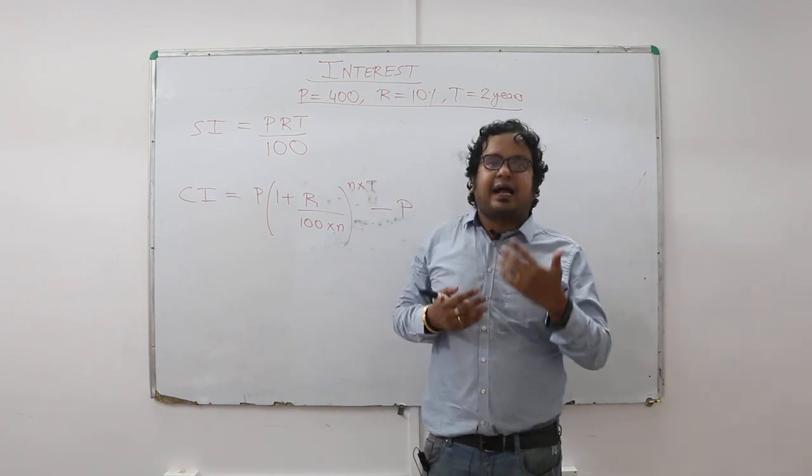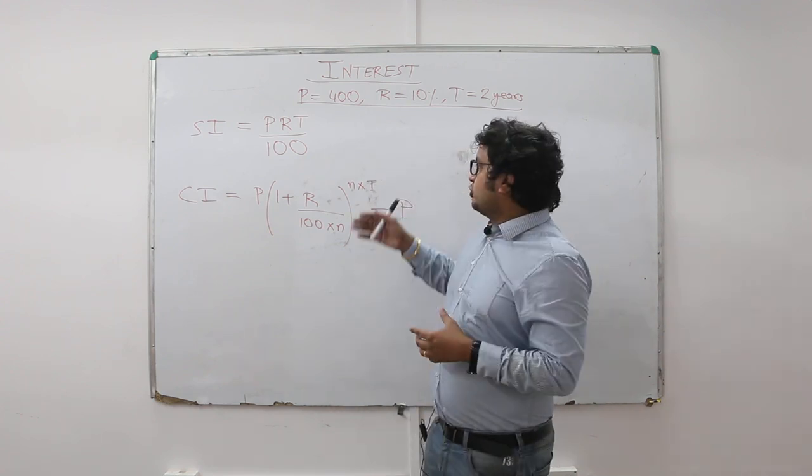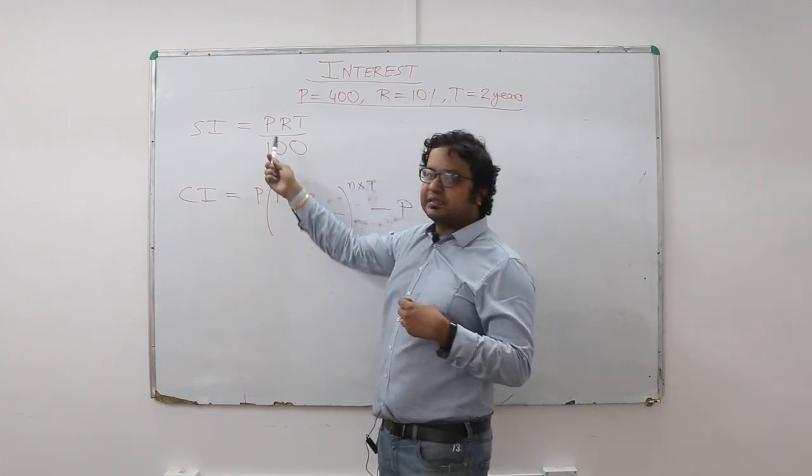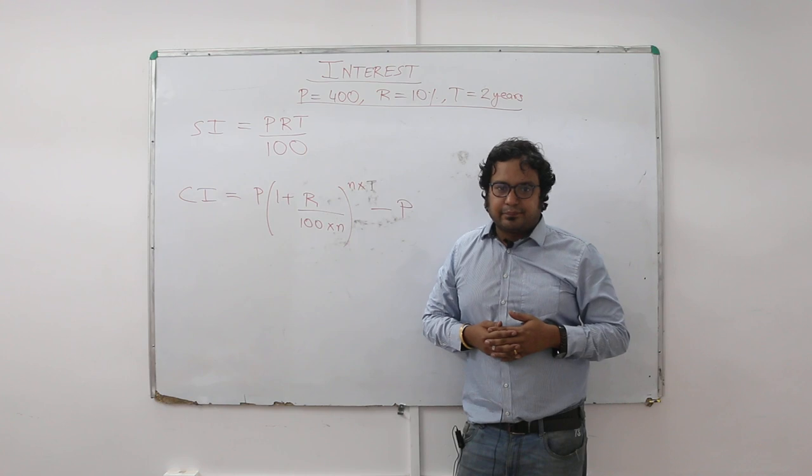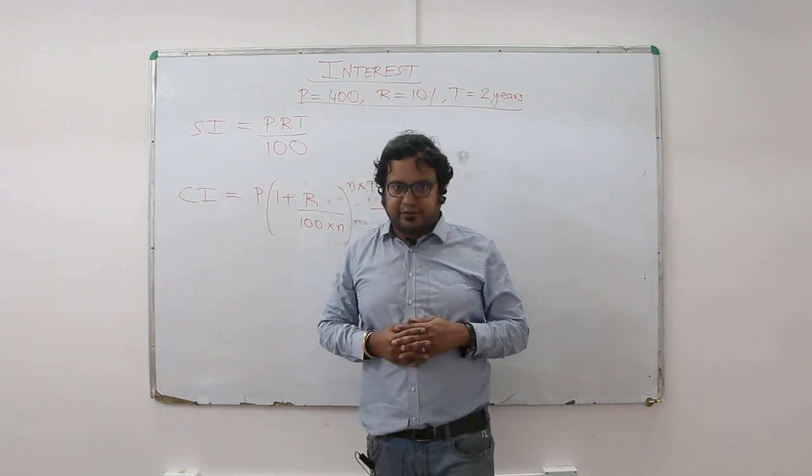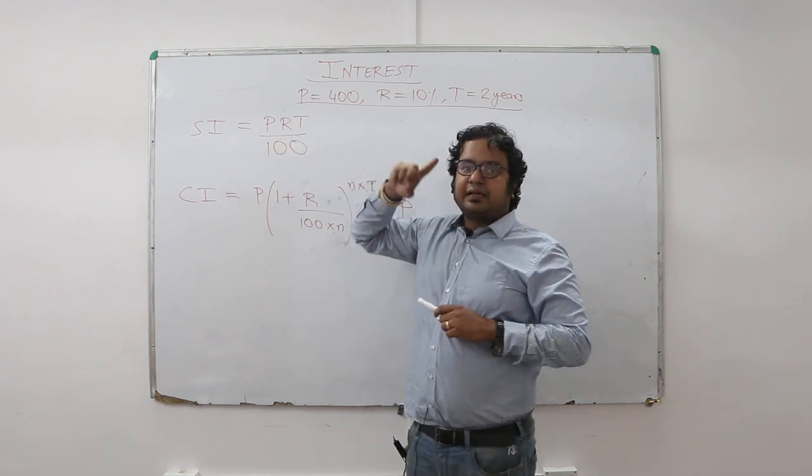So let's have a look at the formula here. Simple interest is given by PRT by 100, that is principal into rate into time divided by 100. R here denotes the annual rate of return.